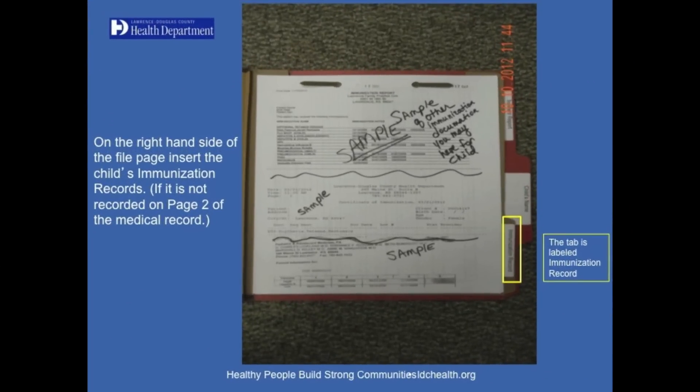On the right-hand side of the file page, insert the child's immunization records if they are not recorded on page 2 of the medical record. Here shown is a sample of a child's immunization records. The tab is labeled Immunization Record.